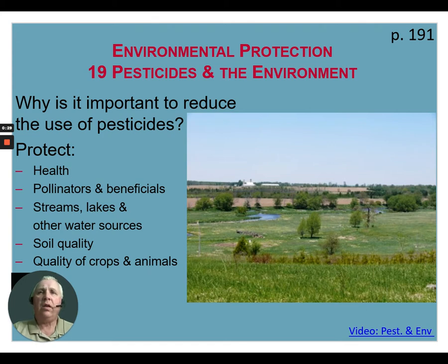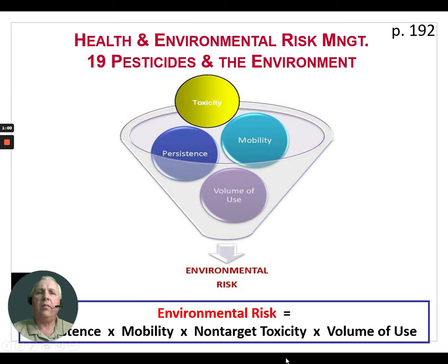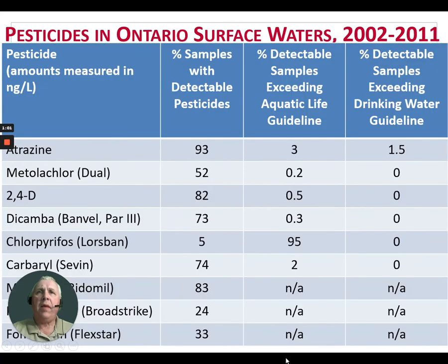When we talk about pesticides in the environment, we need to consider this formula: environmental risk consists of the persistence of the pesticide times the mobility of that pesticide times the non-target toxicity times the volume of use. If any of those items are extremely high, we increase the amount of environmental risk.